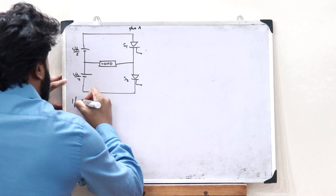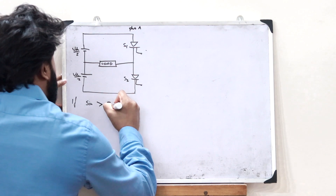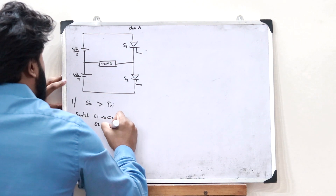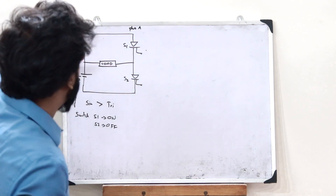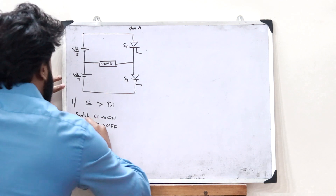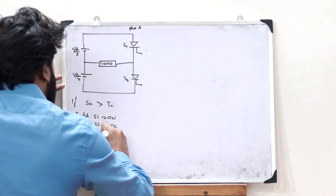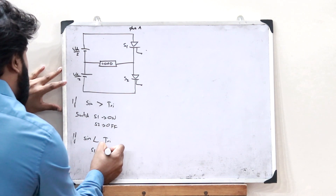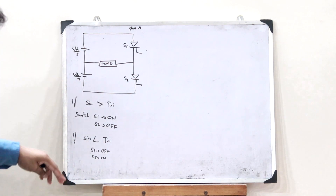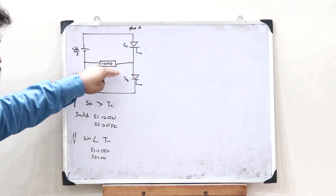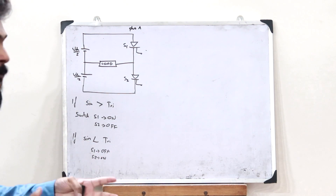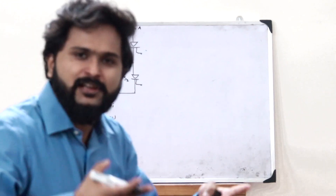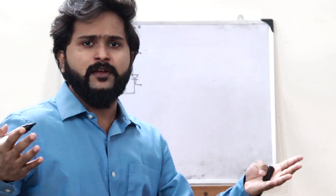We compare the sine wave with the triangular wave. If at a particular point the sine wave is greater than the triangular wave, switch S1 is on and S2 is off — we obtain plus VDC/2. If at some point the sine wave is less than the triangular wave, then S1 is off and S2 is on — we obtain minus VDC/2, hence generating a PWM signal.